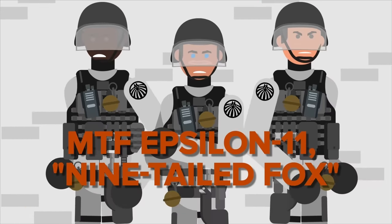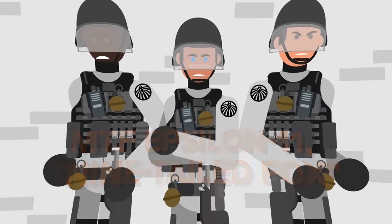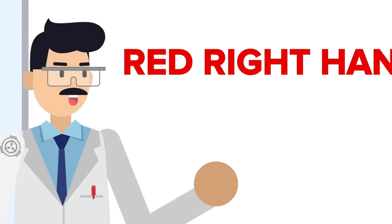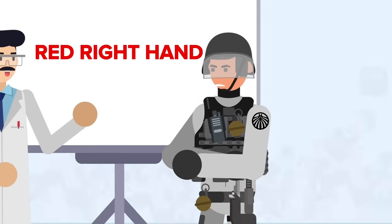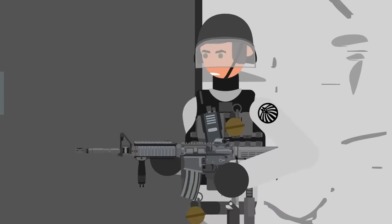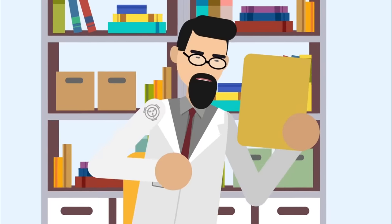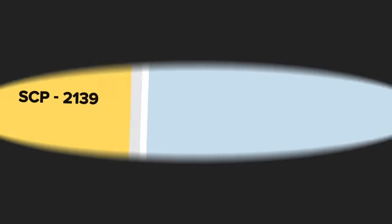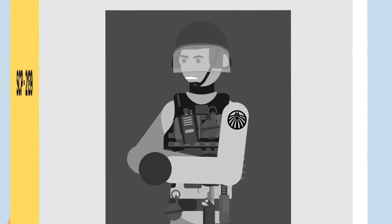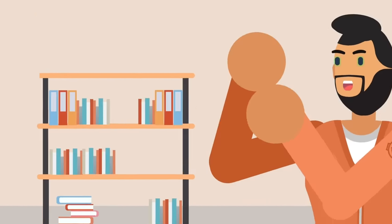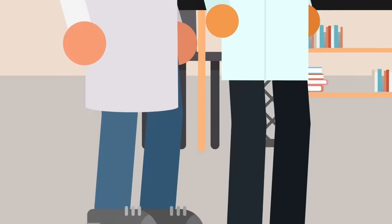MTF Epsilon-11, Nine-Tailed Fox, are another one of the most classified mobile task forces, existing only under the oversight of the Red Right Hand. They work internally and are only dispatched to Foundation sites when standard protocols fail and multiple breaches are imminent. They were brought in to deal with the SCP-2139 incident, a strange psychological phenomenon that inexplicably increased the suggestibility of Foundation staff at Site-35. This made the infected staff agree with everything they heard.